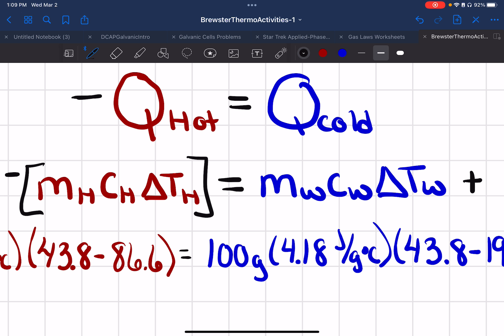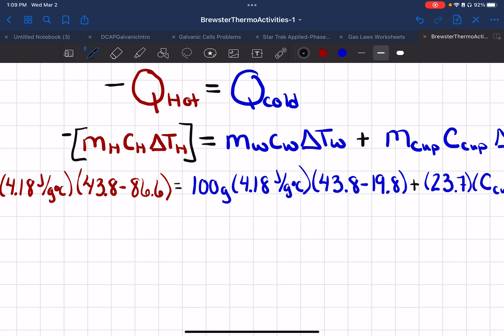And so since I know that Q equals MC delta T, then I'm going to plug that in. This is just simply the mass of the hot, the C of the hot, and the delta T of the hot. And on the other side, I have the mass of the water, the C of the water, delta T of the water.